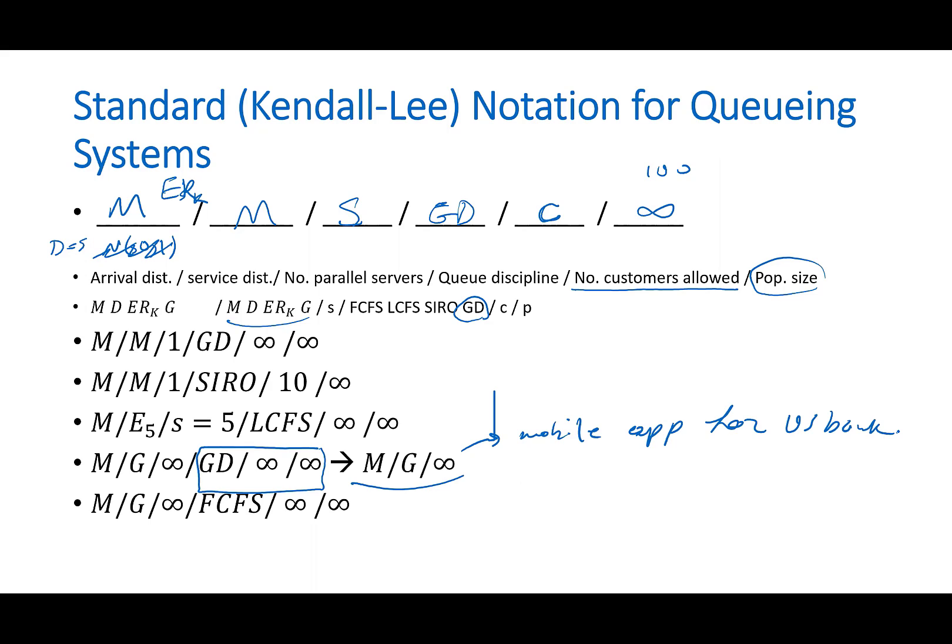The last one also has infinite servers, but the only difference is that it picks people first come first serve, which doesn't make any difference because you don't even form a line when there are infinite servers.